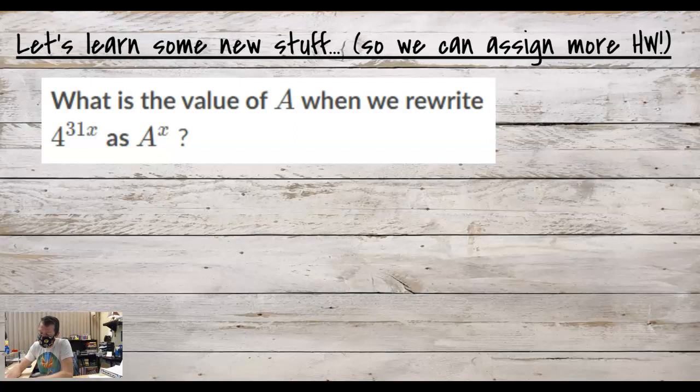Please write this down. This is the first problem that I want you to challenge yourself with. And then you're going to be like, oh, this isn't that hard, and I promise you, I'm going to throw some very difficult problems at you today. So essentially, they're saying, what is the value of A when we rewrite 4 to the 31x as A to the x?